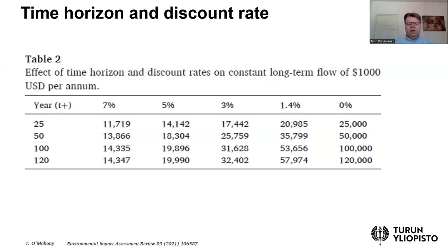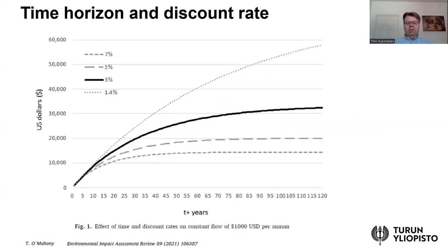This illustrates the impact that both time horizon and discount rate make on a project. The following figure is the same example in graphical terms, with four lines representing alternative discount rates. On the horizontal axis we have years, indicating the time horizon. The topmost line represents the smallest discount rate of 1.4 percent, the thickest solid line indicates three percent, and the lowest line corresponds to seven percent.